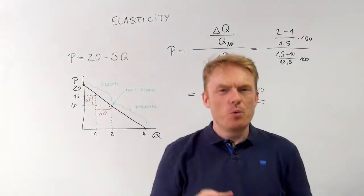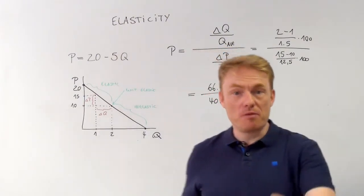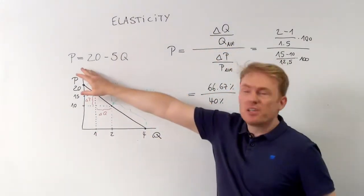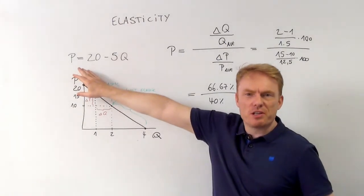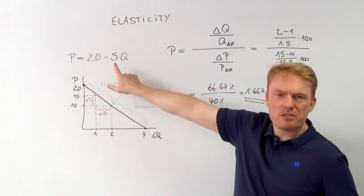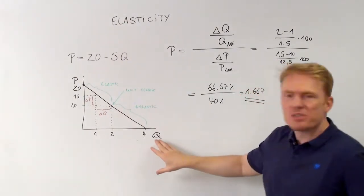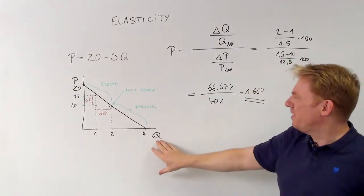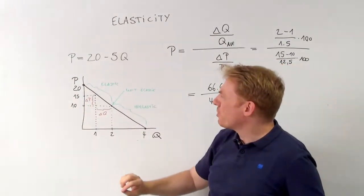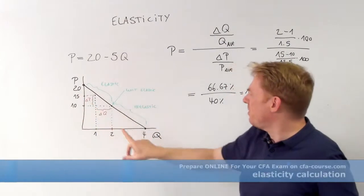Welcome to Economics. We're talking about the concept of elasticity — the price elasticity of demand. Consider the following price function: the price equals 20 minus 5 times the quantity. On the horizontal axis is the quantity, on the vertical axis is the price, which means the demand function goes down from 20 to 4.